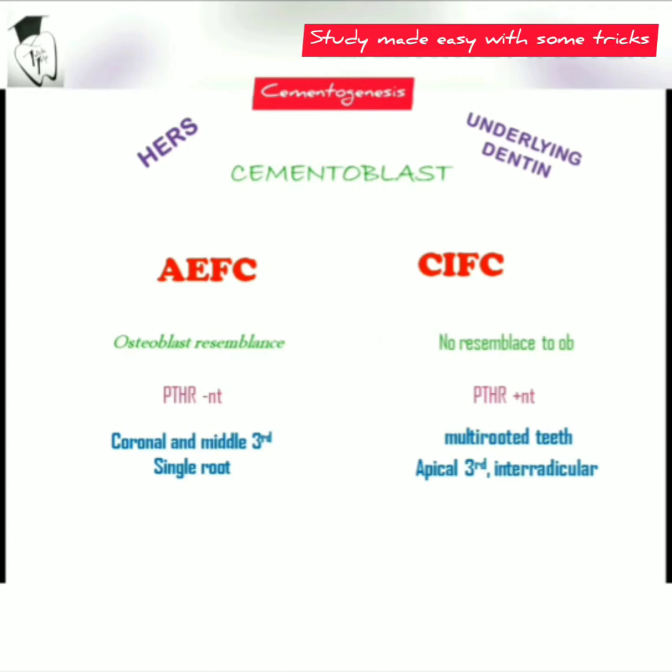The acellular extrinsic fiber cementum is formed on the coronal and middle third of the root, which is seen in single-rooted teeth. The cellular intrinsic fiber cementum is formed on multi-rooted teeth in the apical third or the interradicular area of the tooth.